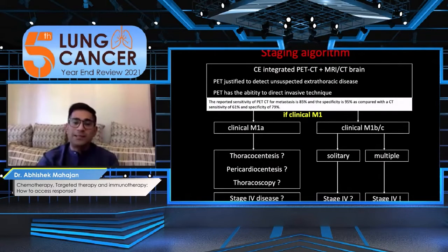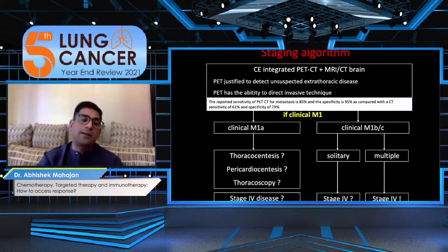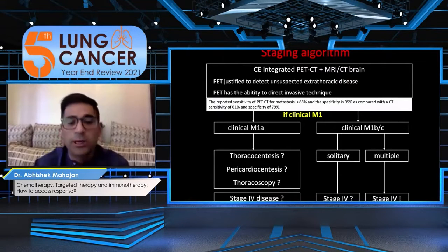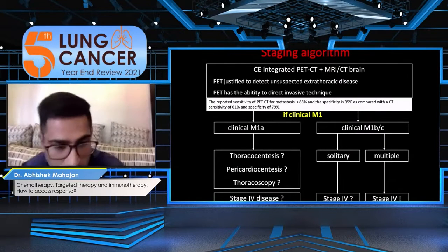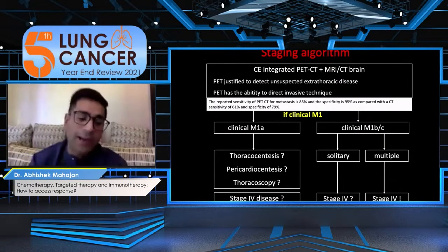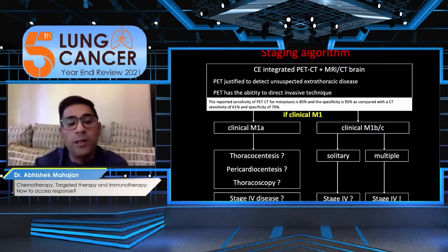For the advanced cases, mostly they are either clinical M1 or clinically M1B. They are either proven with thoracocentesis, pericardial synthesis and thoracoscopy. If proven to be stage 4 disease, they are managed with either targeted therapy and if not then immunotherapy.